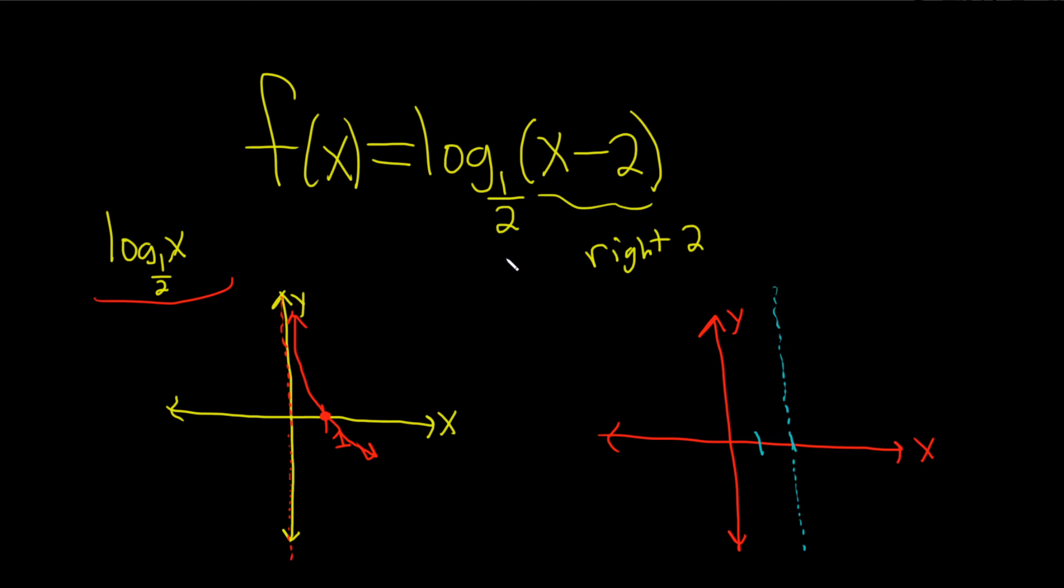And as far as the actual graph itself, it's always 1 over. So 1 over will put us here at 3. And then we have our little logarithmic function. Boom.